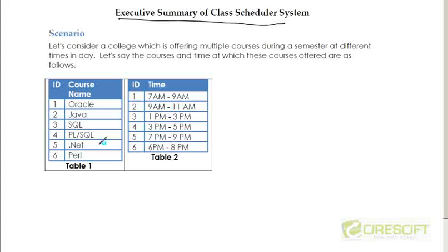For example, this college is offering six courses at six different times. That means Oracle can be taught at these times like 7 to 9, or 9 to 11, or 1 to 3, or 3 to 5, and so on. Similarly, Java can be taught at times like 7 to 9, and so on.